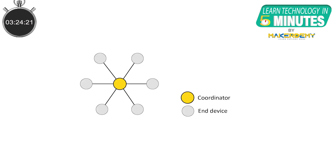A Zigbee network can be composed of one coordinator, multiple end devices, and no routers at all.